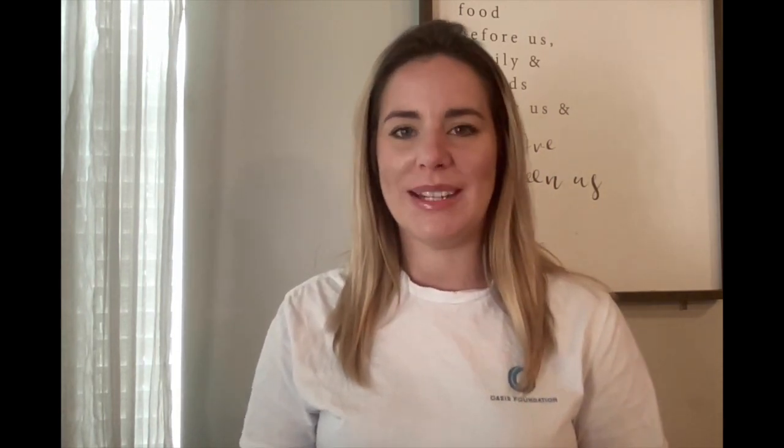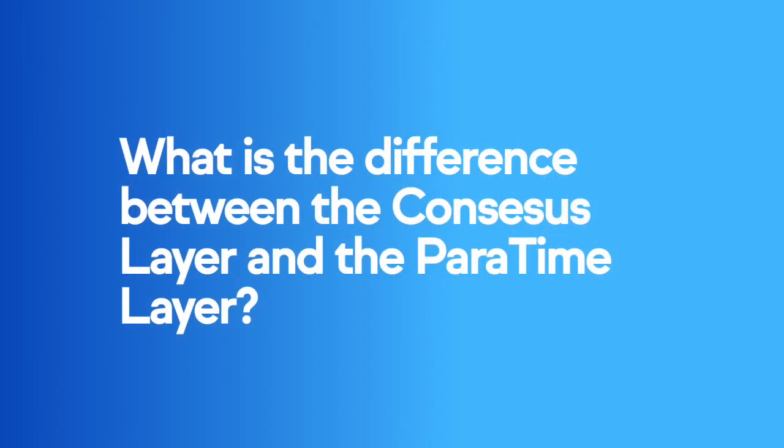Visit the link in our documentation in the description below for more information on building dApps on OASIS. Question 2: What is the difference between the Consensus Layer and the Paratime Layer? There are two main layers to the OASIS network: the Consensus Layer and the Paratime Layer.